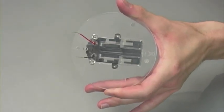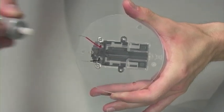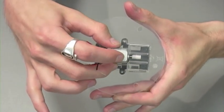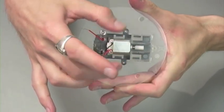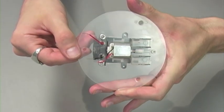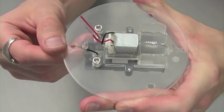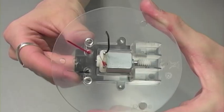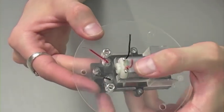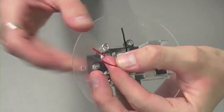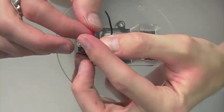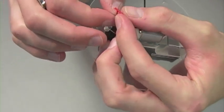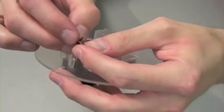For step two, take your motor, place it on this side of the round plate so that the wires are facing up and the worm gear of the motor is facing away from the eyelets. Twist the exposed ends of the wires together, red to red, and black to black.